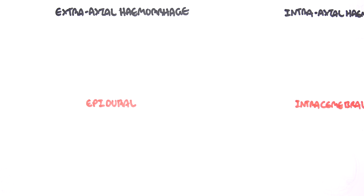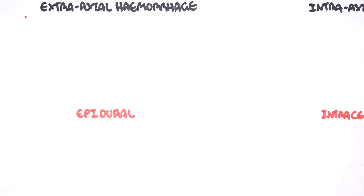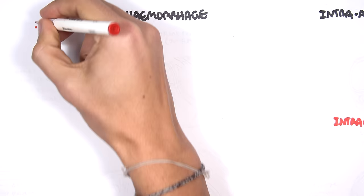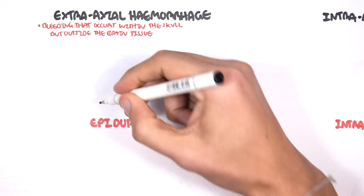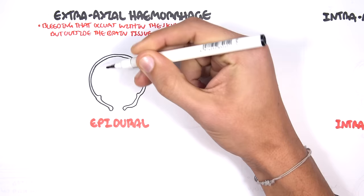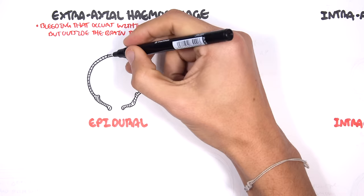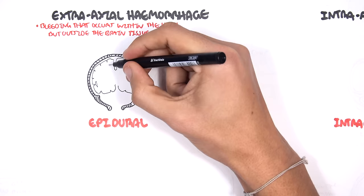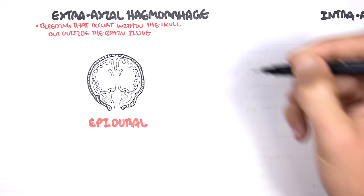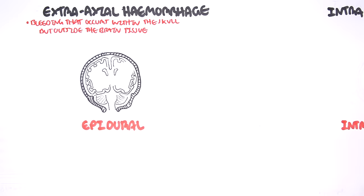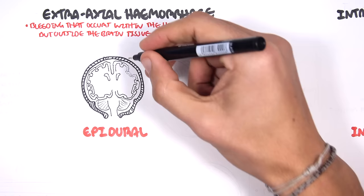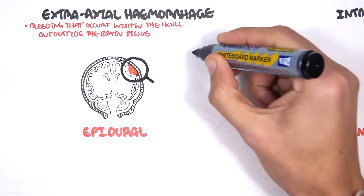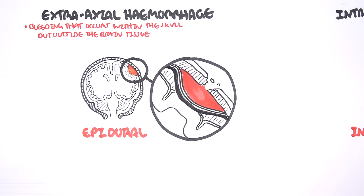Now let's look at these different types of hemorrhages. Let's begin by first looking at extra-axial hemorrhage — bleeding that occurs within the skull but outside the brain tissue. The first example is epidural hemorrhage, which occurs essentially between the skull and the dura membrane. Here I am drawing a cross-section through the head, and we can see the brain inside with the brain stem and the cerebellum. Epidural hemorrhage occupies the space between the skull and the dura membrane, so let's revise the layers of the cranium.